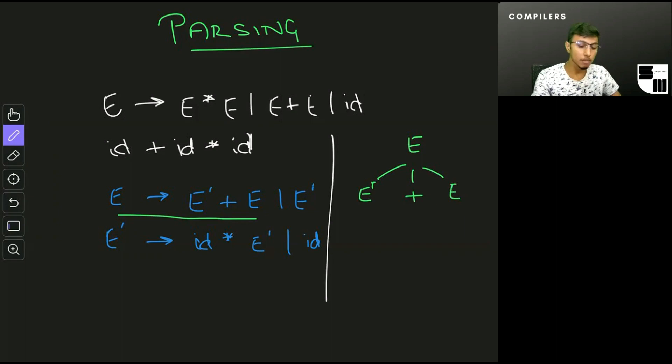The left E' just goes to id, and the right E will go to E' followed by the E' going to id times E', and finally the rightmost E' will go to an identifier.